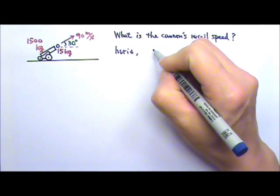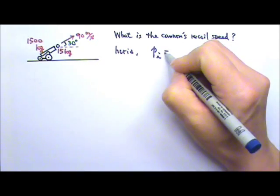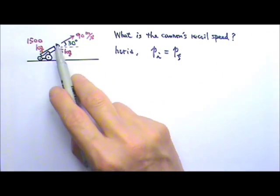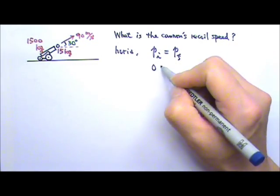In the horizontal direction, the initial momentum equals the final momentum. Initially, nothing is moving, so the initial momentum is zero.